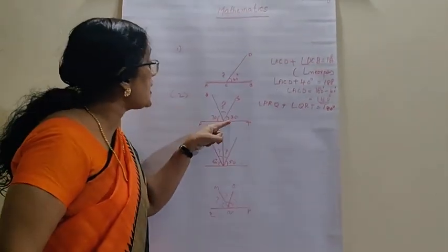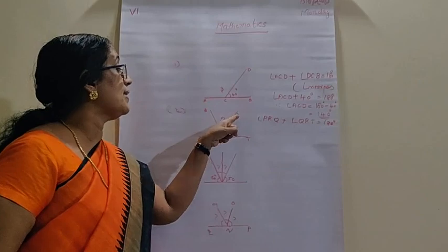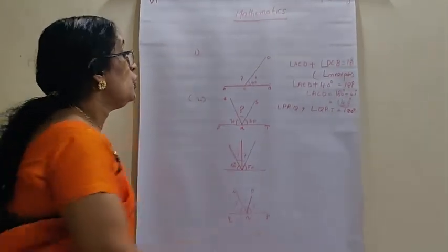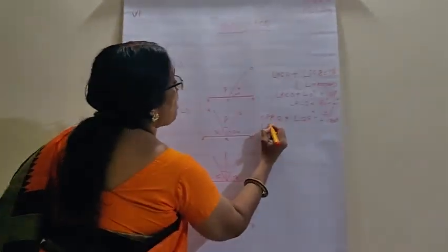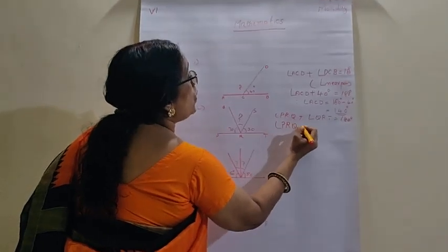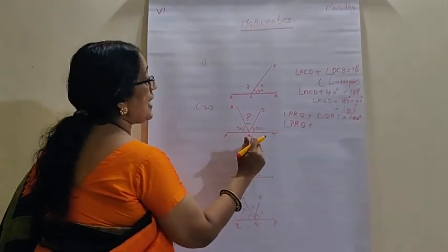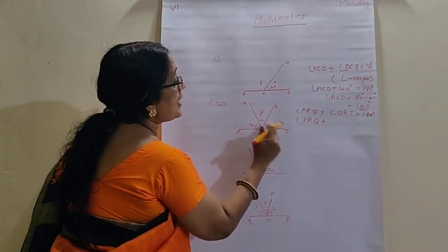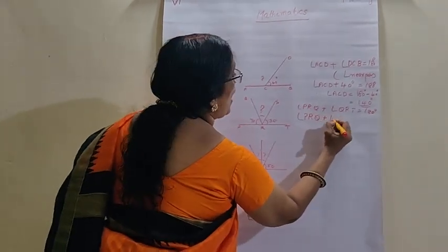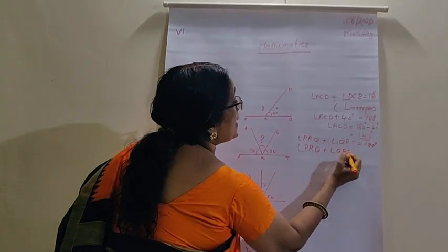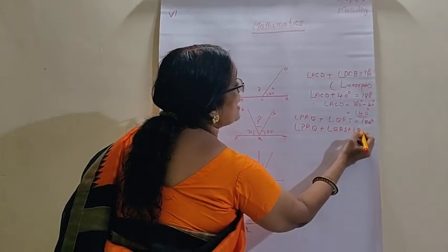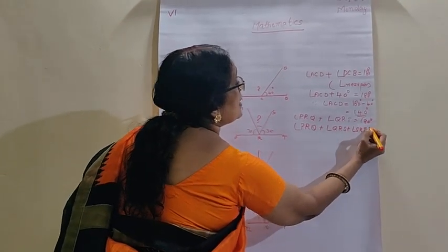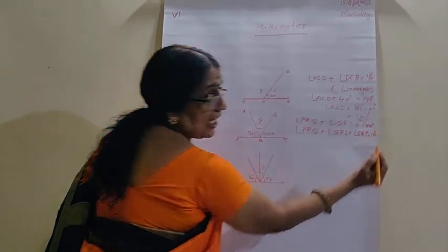Then this QRT is again divided by another line RS. So we can write it as QRS plus SRT. Right children? So this equals 180 degrees. Understood?